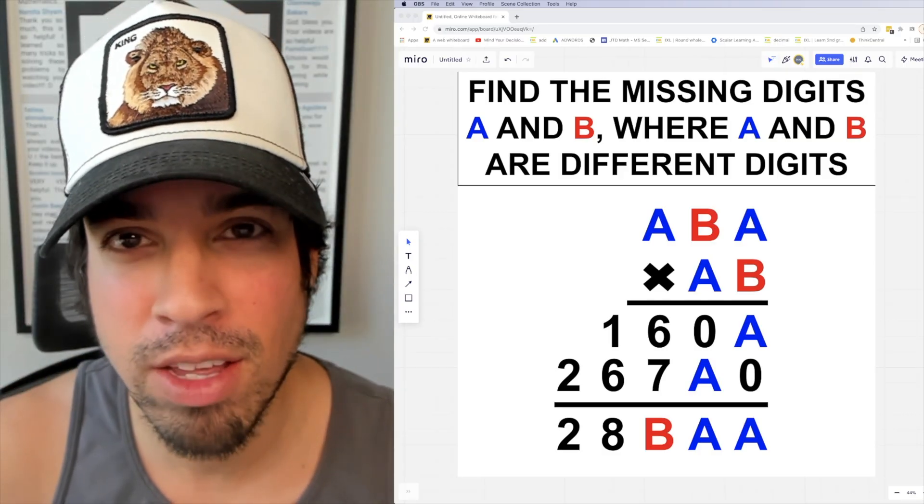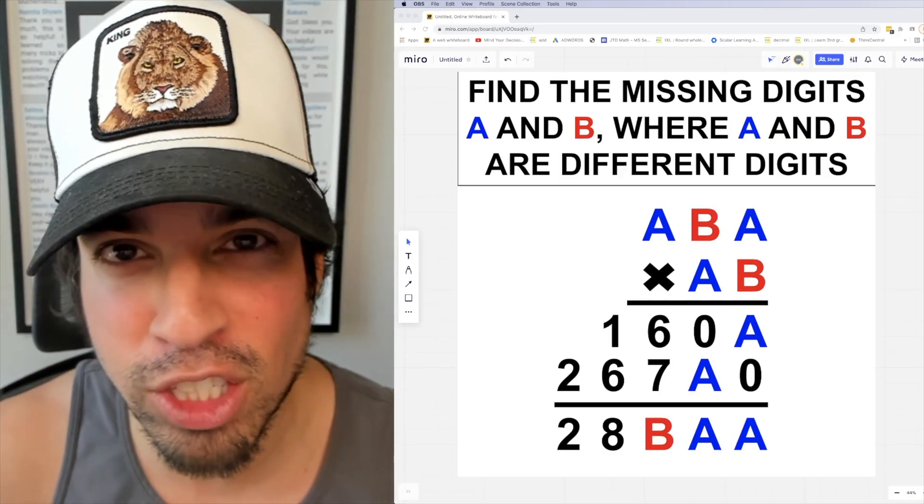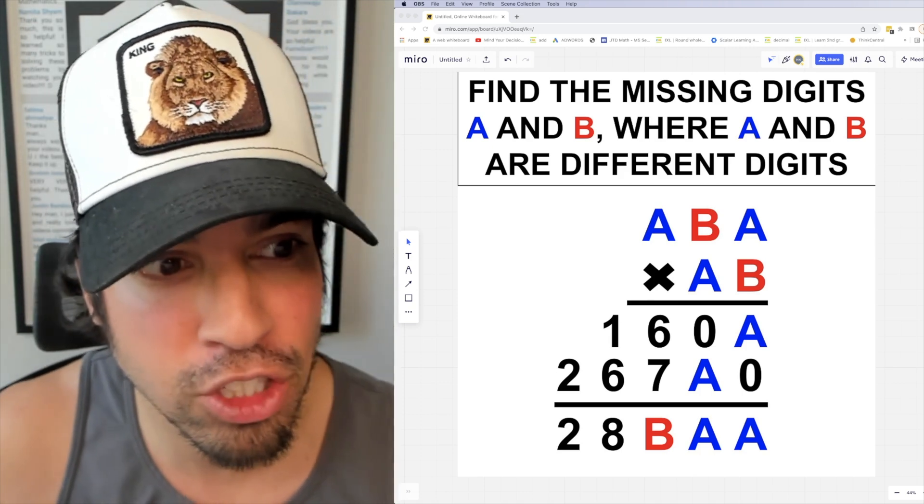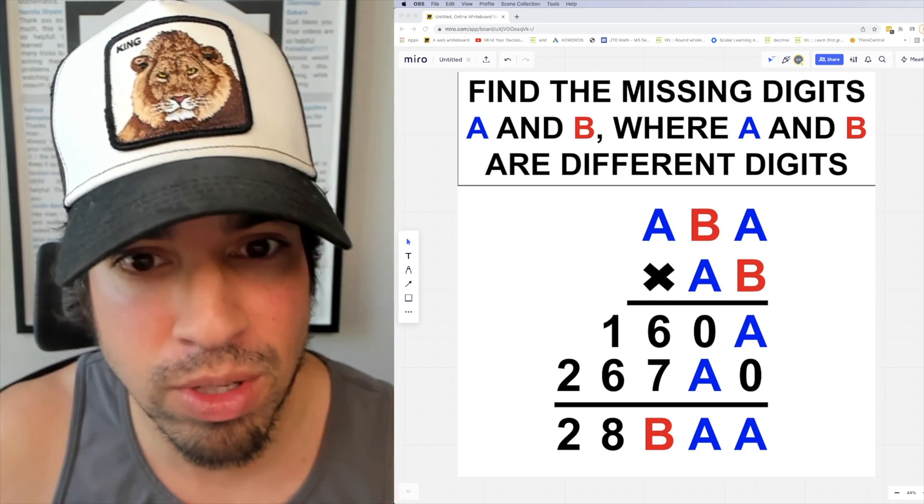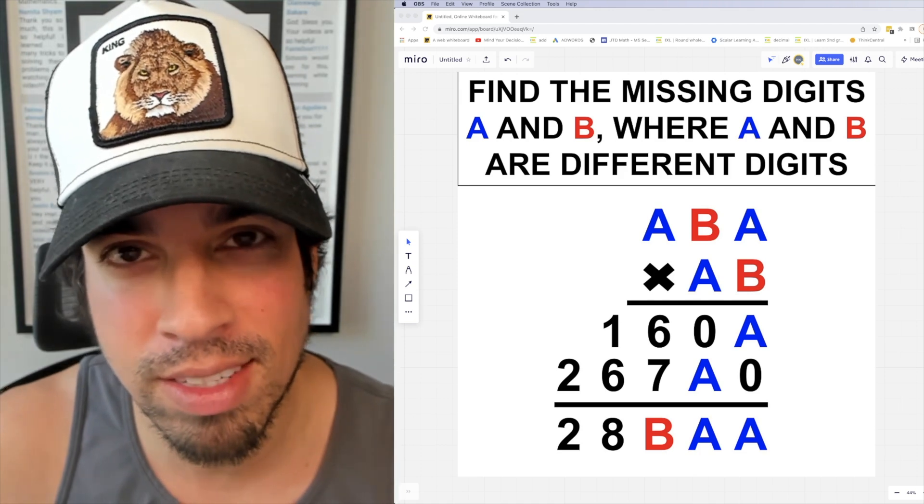What's up everybody and welcome back to another math puzzle. In this one, the question is as follows: find the missing digits A and B, where A and B are different digits. Hit that pause button and see if you can figure it out. When you're ready, hit play and I'll give you the explanation.